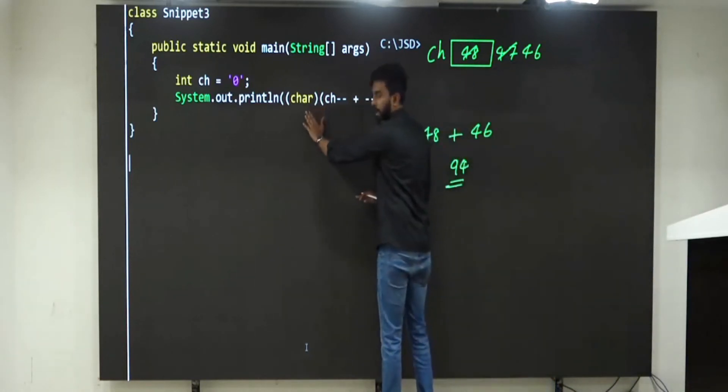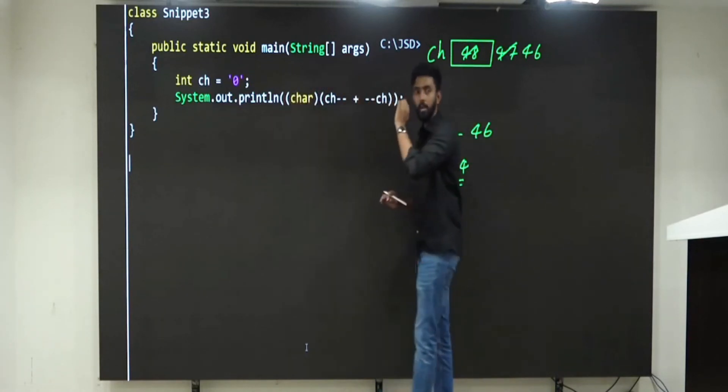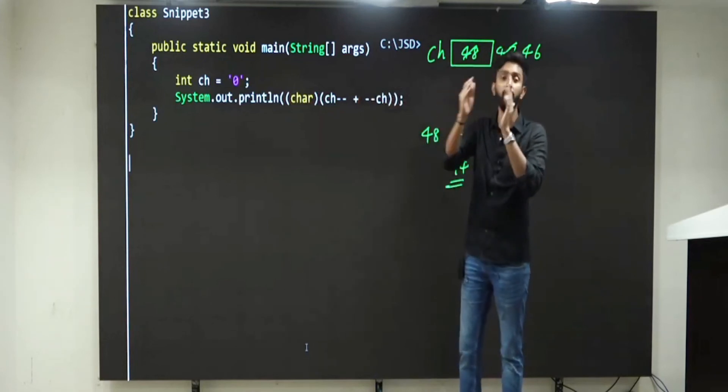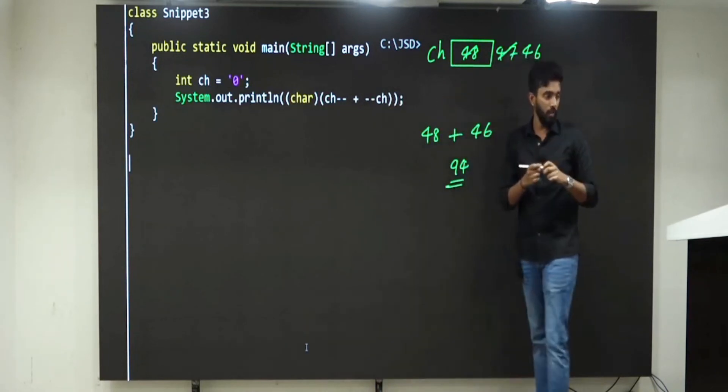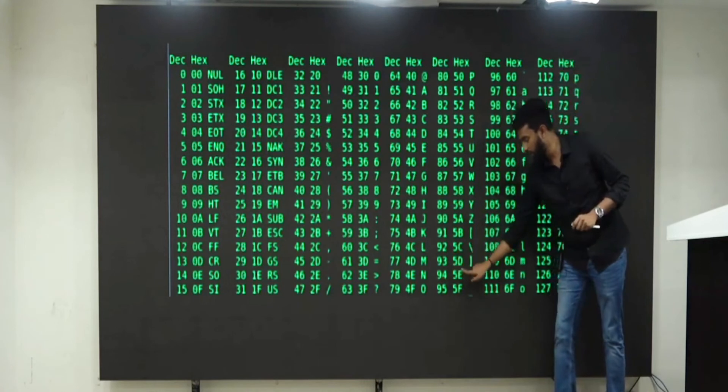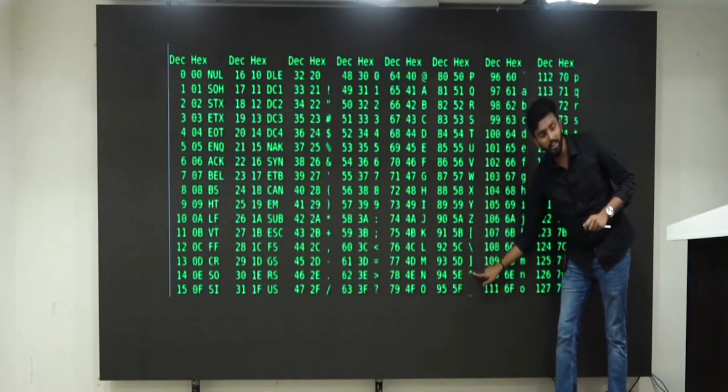I am not printing 94. I am converting it into a character. Now what is the ASCII or what is the character of 94? If you ask me what is it, but in this question, what it will print is nothing but your caret symbol.